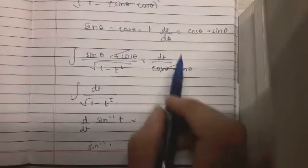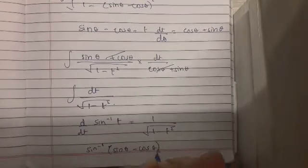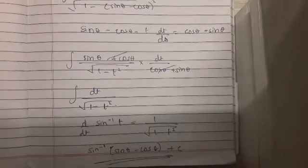So sin inverse t and we have t as sin theta minus cos theta. So the answer is sin inverse sin theta minus cos theta plus c. And that's the final answer.